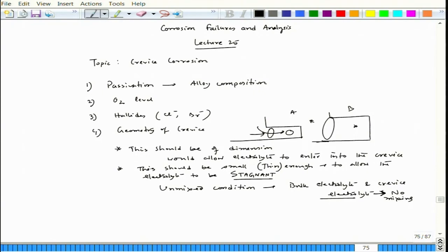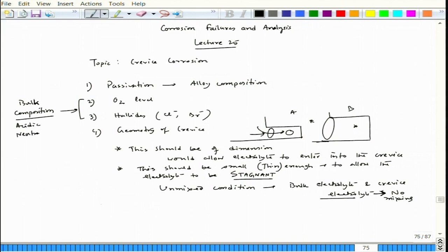The fifth factor is the bulk composition of the media — the bulk constituents' composition. This could be acidic, neutral, or basic to begin with. Interestingly, even if it is neutral it will be seen that within the crevice it becomes highly acidic — we will see that when we go into the mechanism. The geometry of the crevice also governs mass transport in the form of convection, and the second part is migration or diffusion of ions.